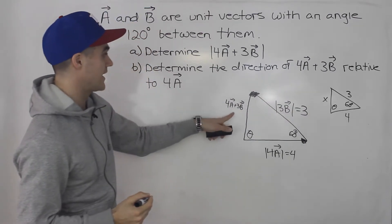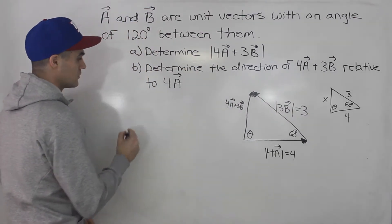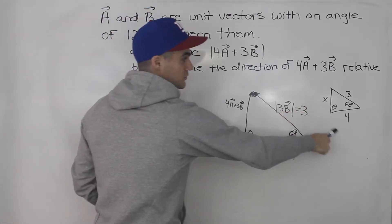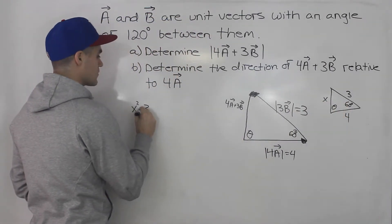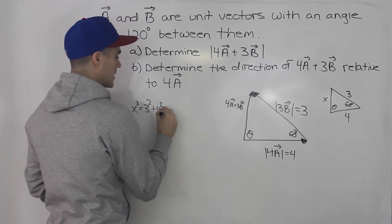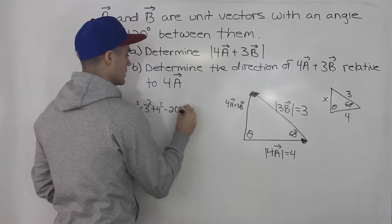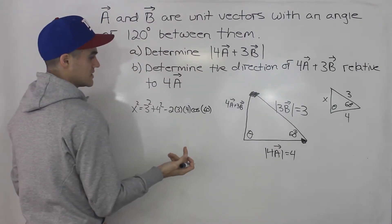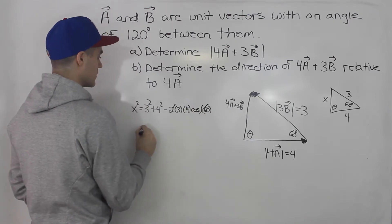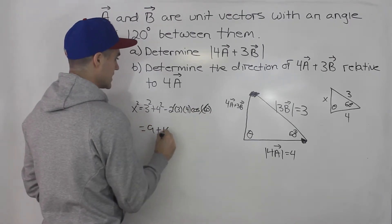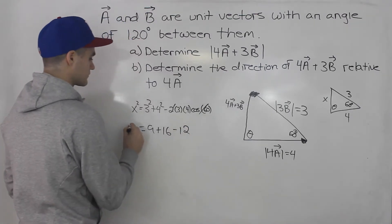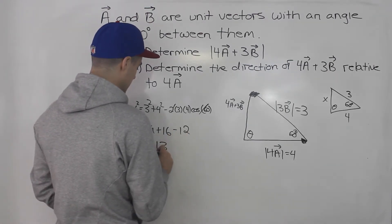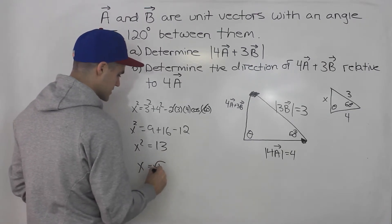So to solve for this x, which is the magnitude of this vector 4a plus 3b, what would we do? We would use cosine law. So for part a, we'll have x squared. So I'm just using the notation from this triangle. It's equal to 3 squared plus 4 squared minus 2 times 3 times 4 cos of 60, cos of that opposite angle. And we know cos of 60 is 1 half. So 1 half times 2, those will just cancel out. So we'll have 9 plus 16 minus 12. That's equal to x squared. So that means x, 9 plus 16 is 25 minus 12 is 13.